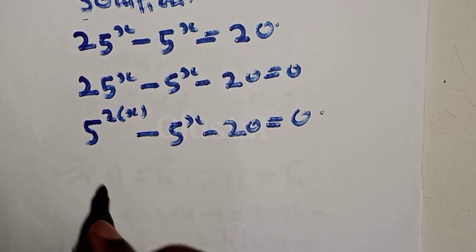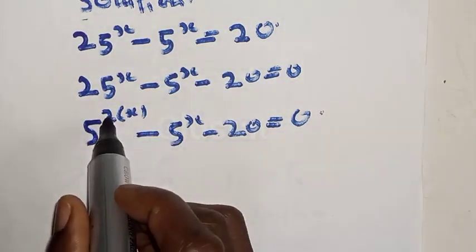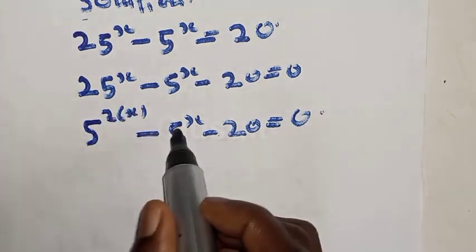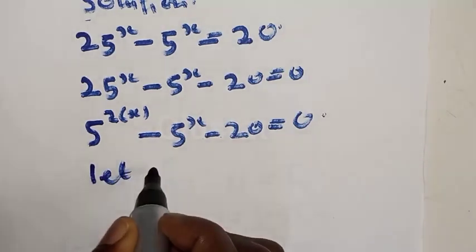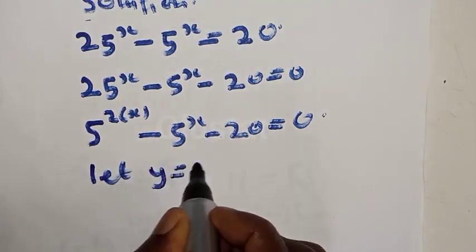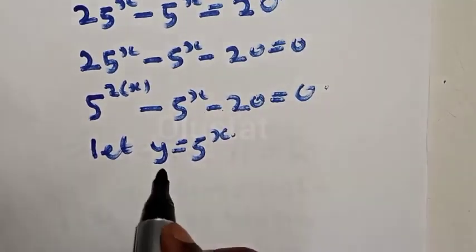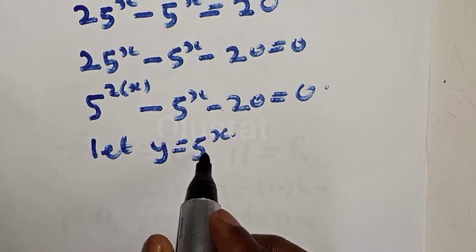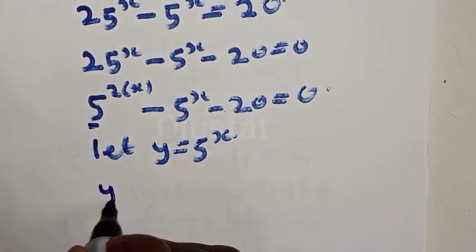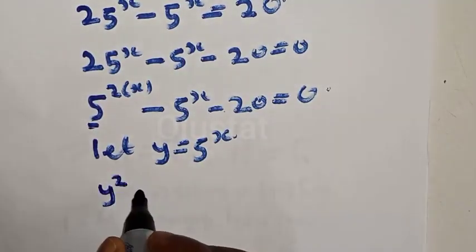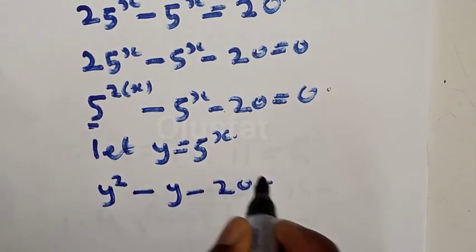Then we have 5 raised to power 2x, since 5 squared into x gives 5 raised to power 2x, minus 5 raised to power x minus 20 is equal to 0. Now let y be equal to 5 raised to power x. That is, anywhere you see 5 raised to power x, you put y there. This implies that we have y squared minus y minus 20 is equal to 0.